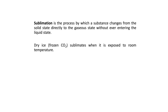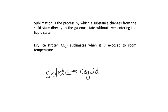Sublimation is something different altogether. Sublimation is the process by which a substance changes directly from solid to gas without ever entering the liquid state. On a diagram, it skips the liquid phase entirely. Dry ice, or frozen CO₂, sublimates when exposed to room temperature. Mothballs, or naphthalene, also sublimate — they don't melt; they just go directly from solid to vapor.